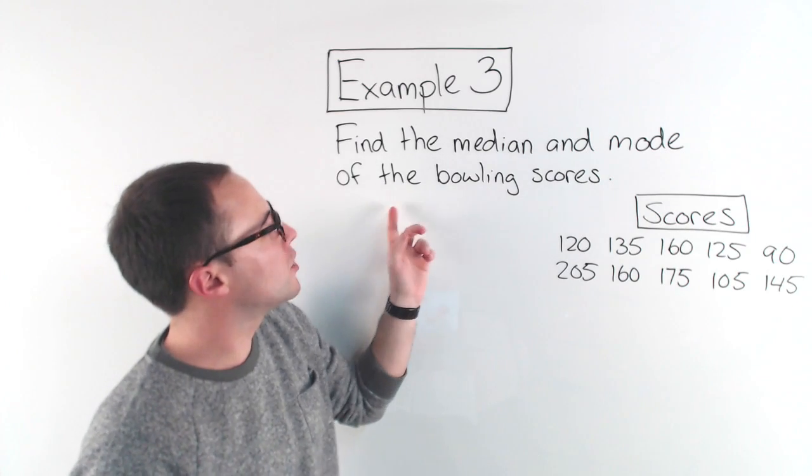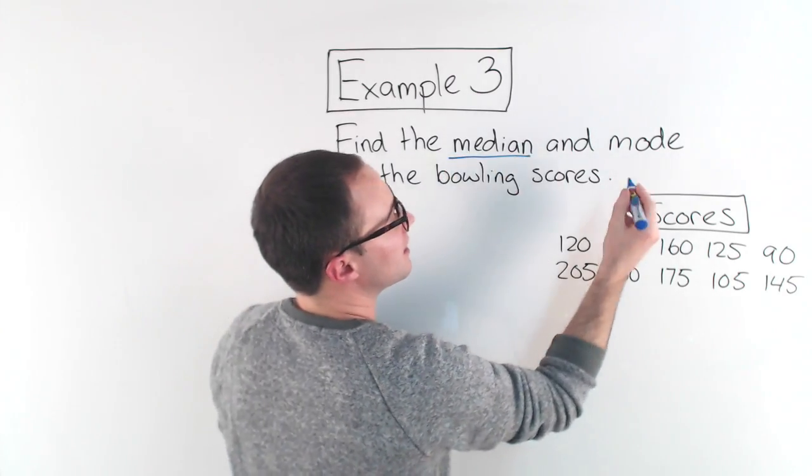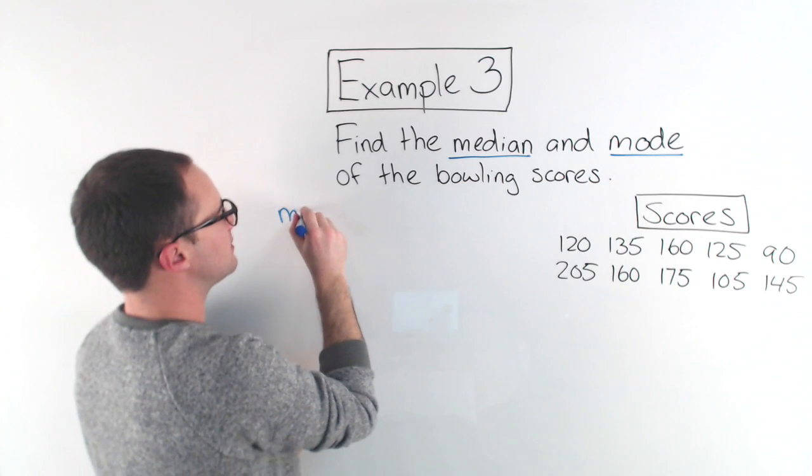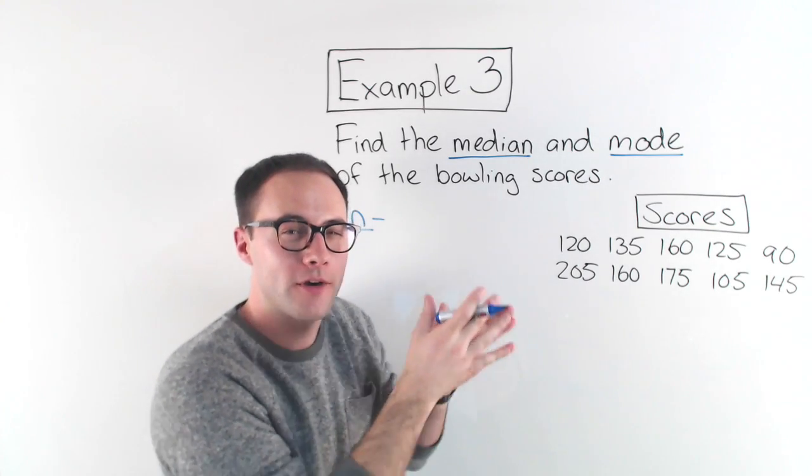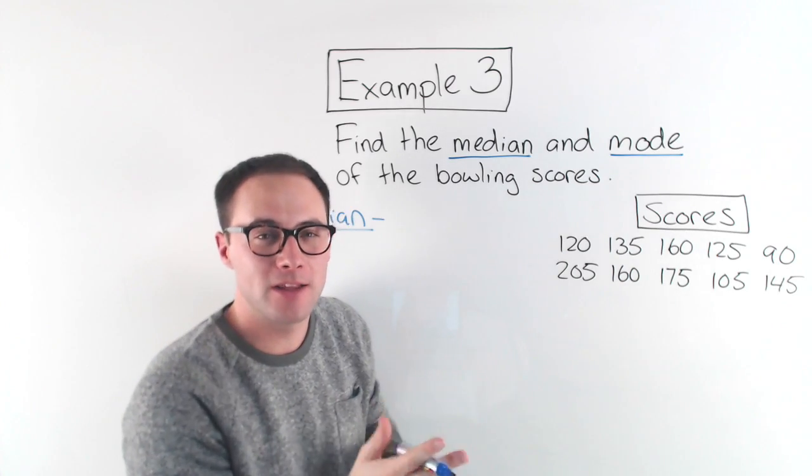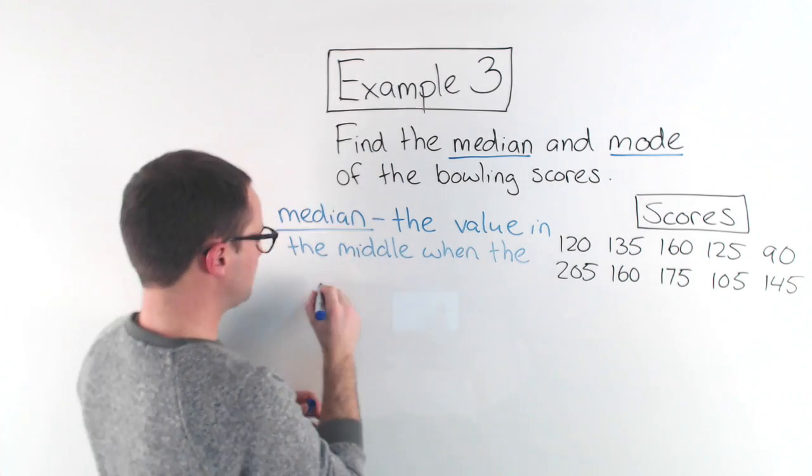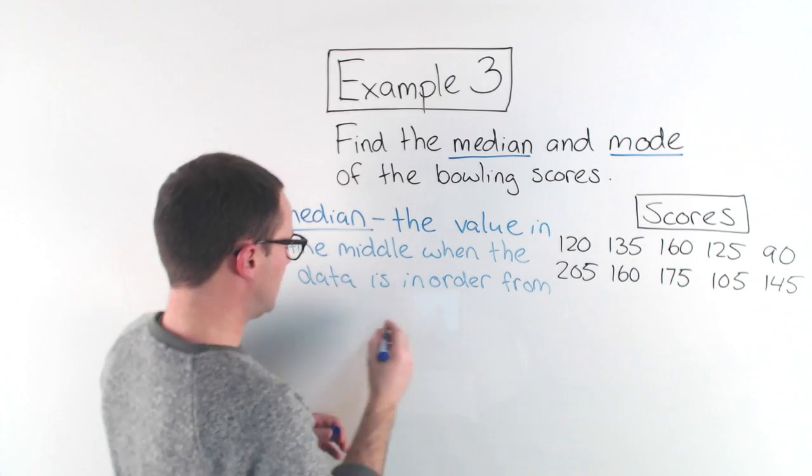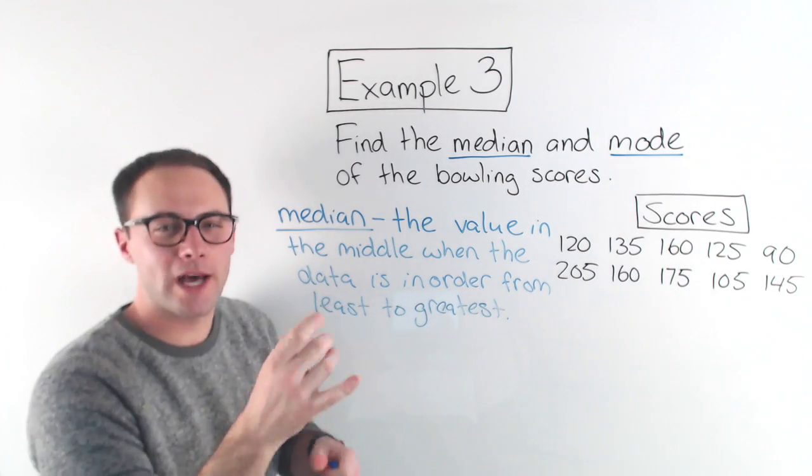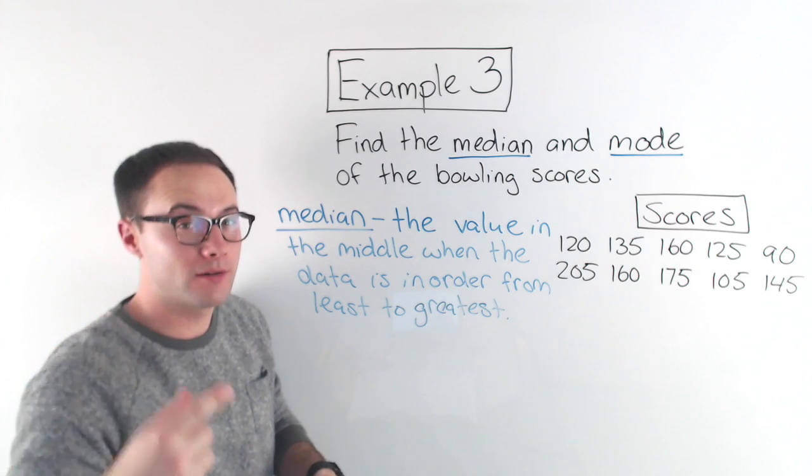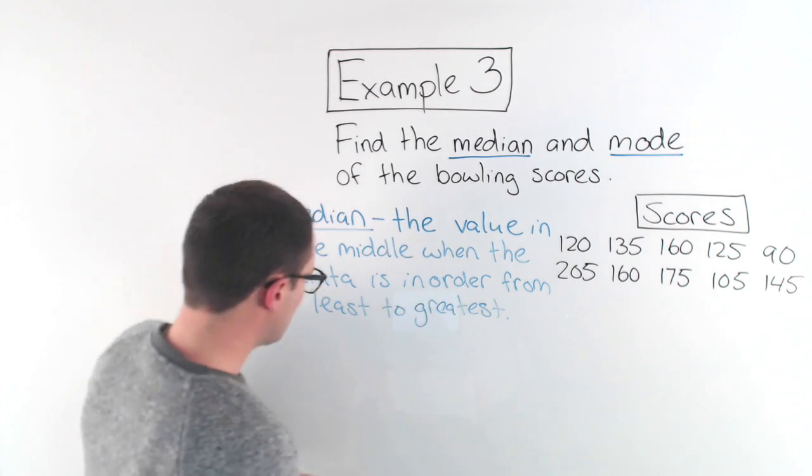Example three. Find the median and mode of the bowling scores. So we've already talked about one measure of center, which was the mean. The other two we're going to talk about today are the median and the mode. So first, let's discuss what exactly is the median. The median is just the value in the middle. When you have all the data in order from least to greatest, the value that's exactly in the middle is called the median. I always remember it, median is the only one out of mean, median, and mode that has an I, and I think I for middle also has an I, so that can maybe help you remember.